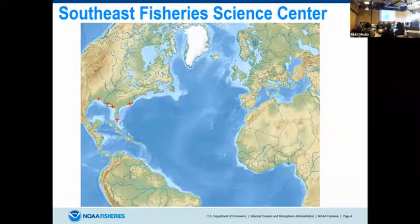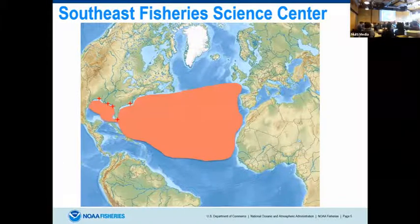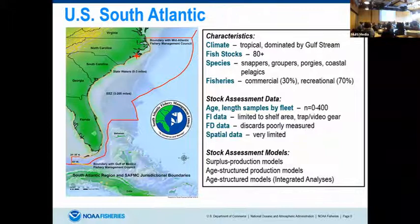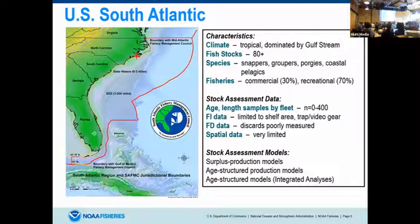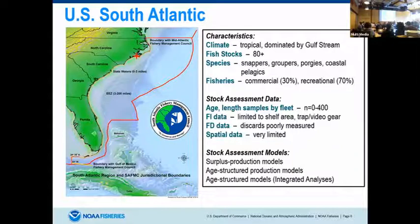Our lab is actually located in North Carolina, and then we have satellite labs. Our main center is in Miami, Florida. Here's our footprint of species covering that area. What I'm going to focus on is the South Atlantic — the Beaufort lab has more or less been tasked to deal with the South Atlantic Fishery Management Council and the species within their jurisdiction, which includes about 80 species of snappers, groupers, jacks, porgies — typical tropical reef fish.